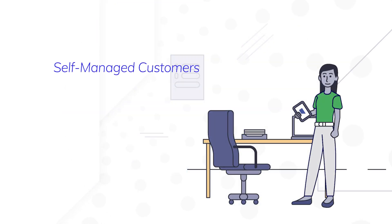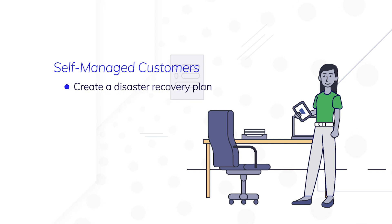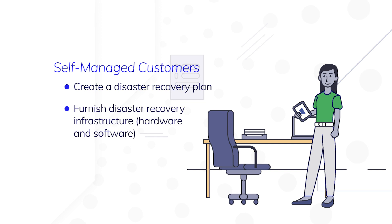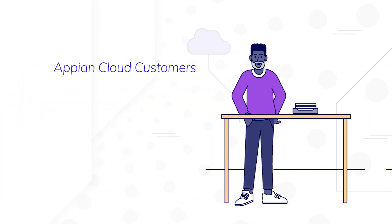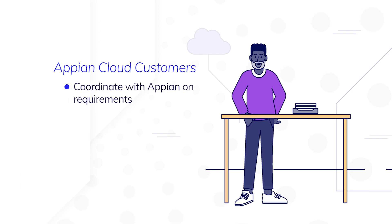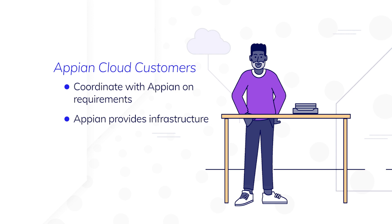Self-managed customers — those who maintain their own Appian servers — need to create a disaster recovery plan and furnish the necessary infrastructure in case of a major incident. Appian cloud customers will coordinate with Appian on disaster recovery requirements, and Appian will handle all disaster recovery infrastructure.